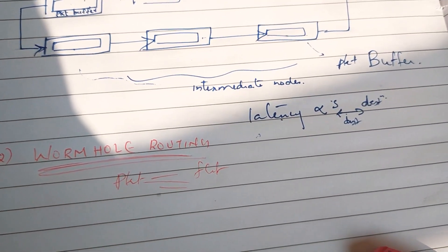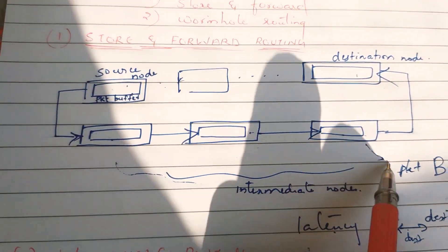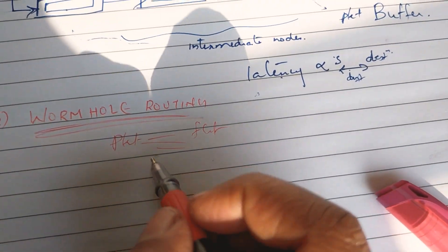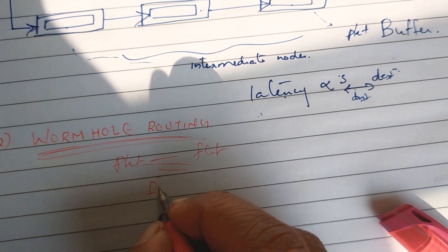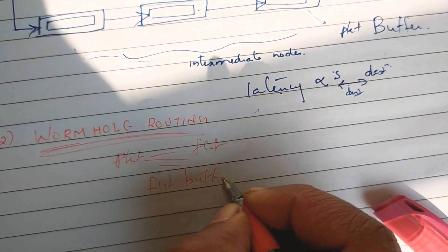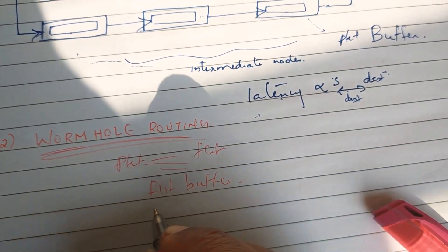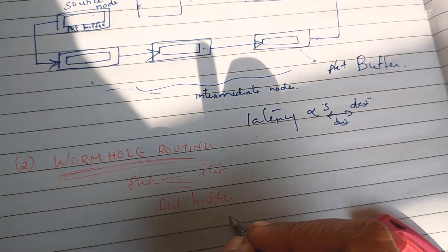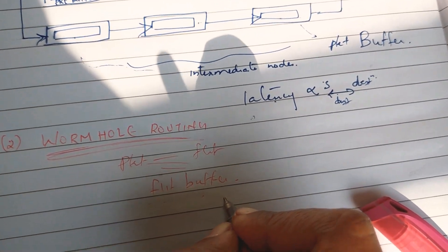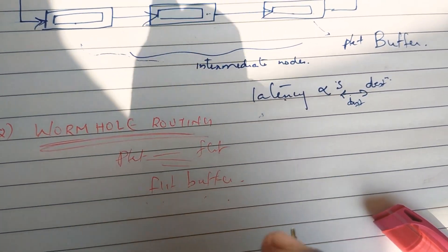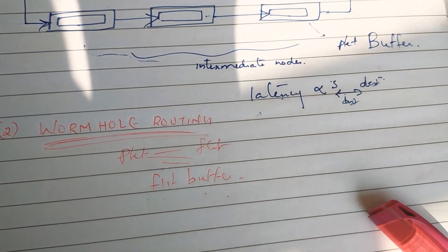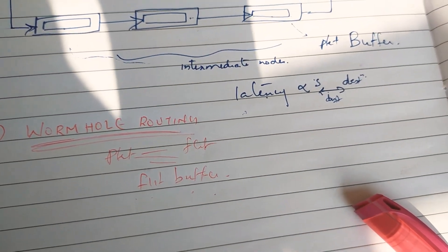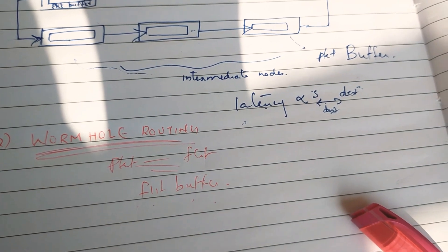Each node has a flit buffer. This buffer is a flit buffer, and in another node we also have flit buffers attached. Flit buffers are used in the hardware routers that are attached to each node. That flit buffer is used in wormhole routing.